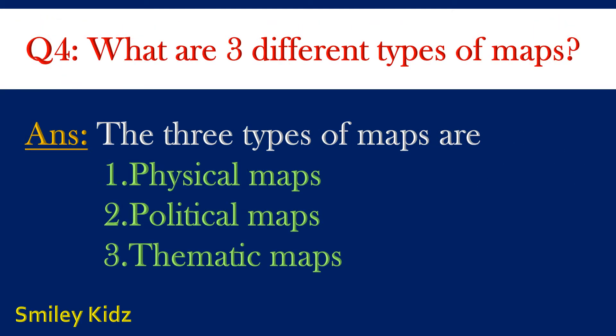Question number 4. What are three different types of maps? Answer. The three types of maps are: 1. Physical maps, 2. Political maps, 3. Thematic maps.